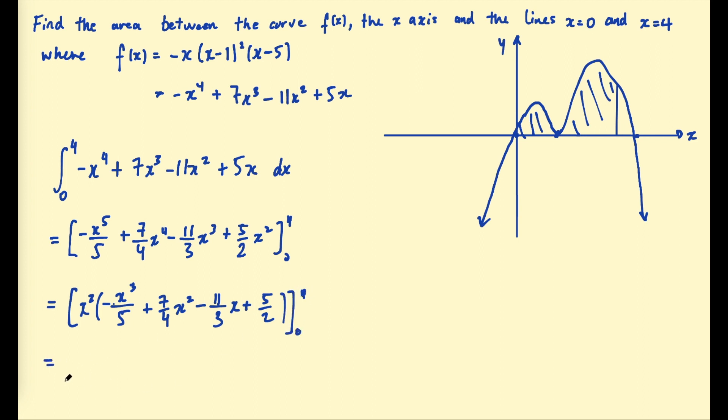So plugging in the 4 first, we're going to get 16 multiplied by all of this. And that 16 will cancel with that 4, so that's just going to be 7 multiplied by 4, which is 28. That's not going to simplify. 44/3. And that's just a constant. And then we need to subtract 0. That's easy, actually, because when we plug in 0, that's just going to be 0.